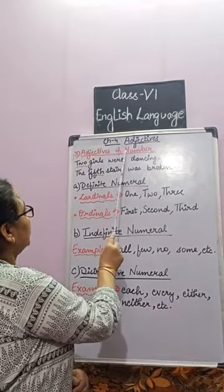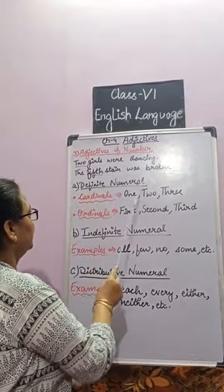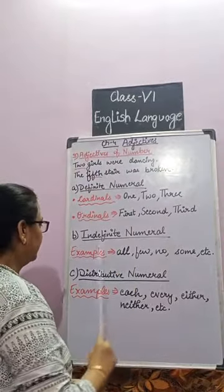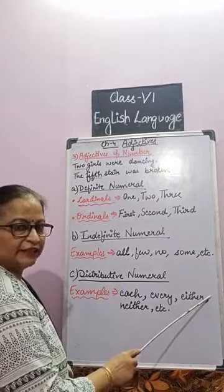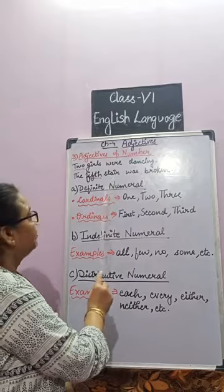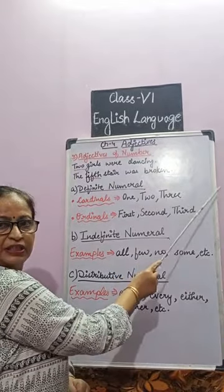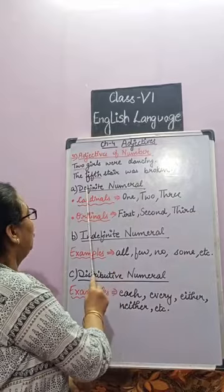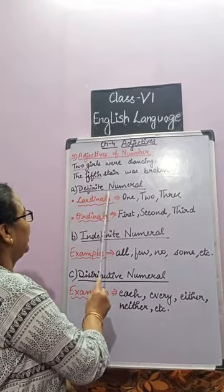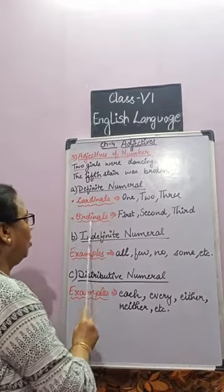Now, adjectives of number are divided into three types: definite numeral adjectives, indefinite numeral adjectives, and distributive numeral adjectives. Let's go through them one by one. Definite numeral adjectives denote exact or fixed numbers, and they are divided into two types: cardinals and ordinals.